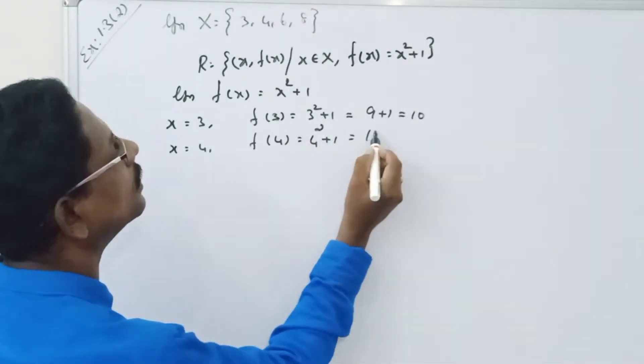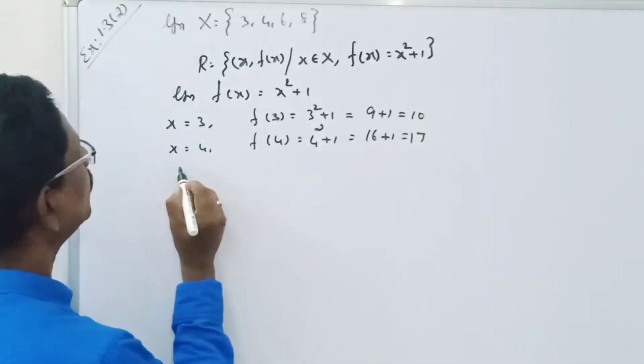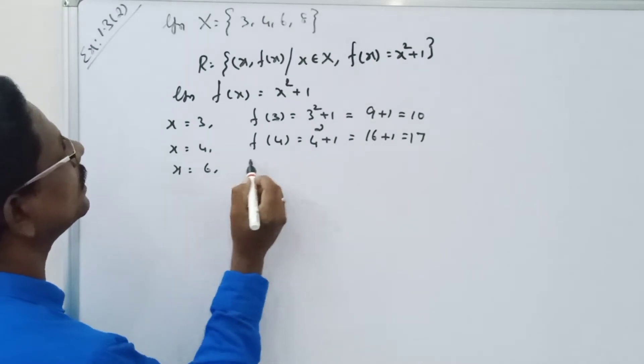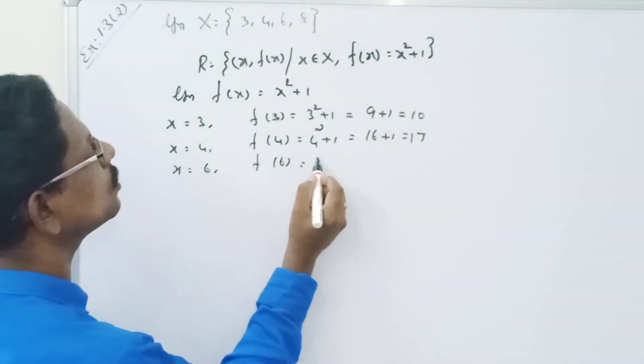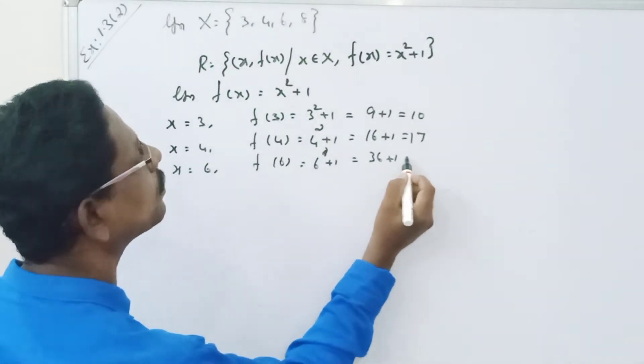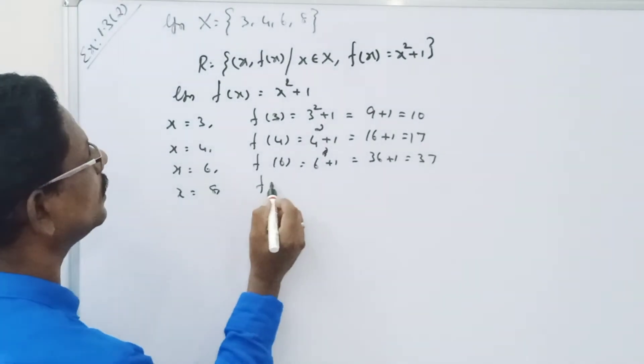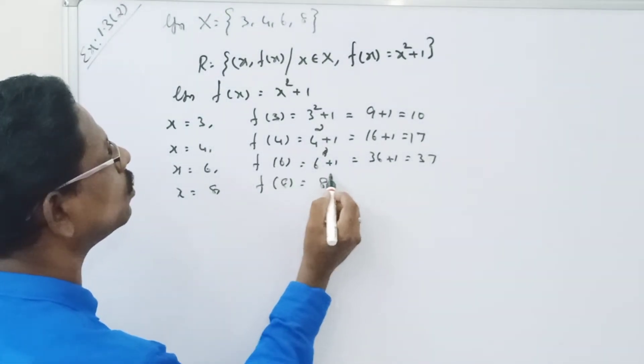When x is equal to 4, f of 4 is equal to 4 square plus 1, 16 plus 1, equal to 70. When x is equal to 6, f of 6 is equal to 6 square plus 1, 36 plus 1, 37.